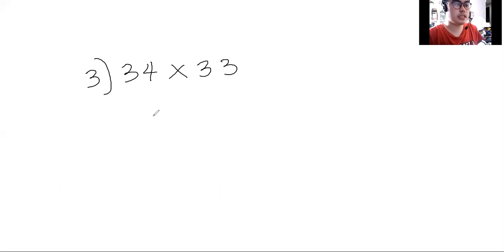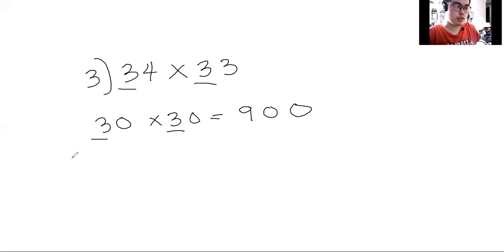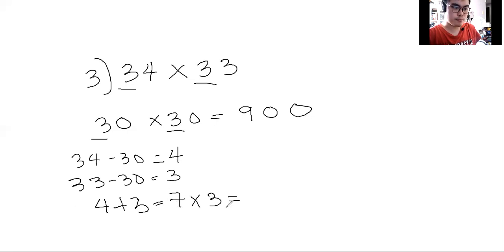So 34 times 33. What is the tens digit? It is 3. Since 3 is the tens digit, we write 30 times 30 for the hundreds digit, which is 900 — because 3 times 3 is equal to 9, then we add two zeros. Next, 34 minus 30 is 4, and 33 minus 30 is 3. For the tens digit, 4 plus 3 is 7, and we multiply it with 3 because 3 is the common tens digit. So the product is 21.